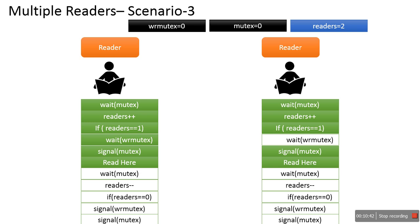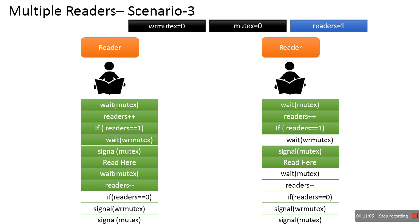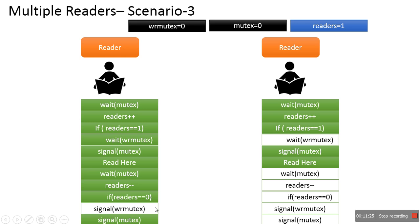If there are more readers, they also start reading at the same time. Once Reader1 is done, it calls wait(mutex) making it 0, then decreases readers to 1. It checks if readers==0 — this is not the last reader, so signal(wr_mutex) is not called. At the end it calls signal(mutex), increasing it to 1. Reader1 is done with its execution.